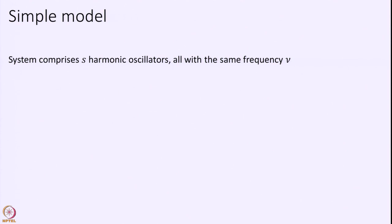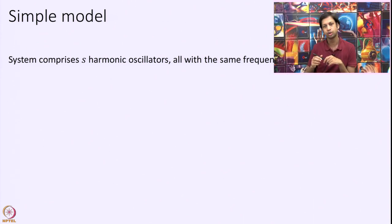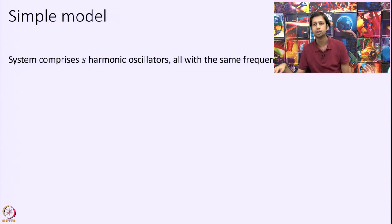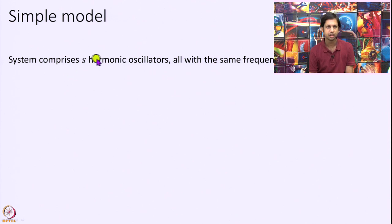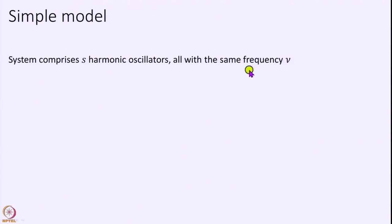What I am presenting today is somewhat instructional. This looks at a very simple model developed by Rice, Ramsburger, and Kassel in 1927 and 1928. The model consists of S harmonic oscillators, which essentially refers to S vibrations in the molecule. For simplicity we assume all have the same frequency nu.